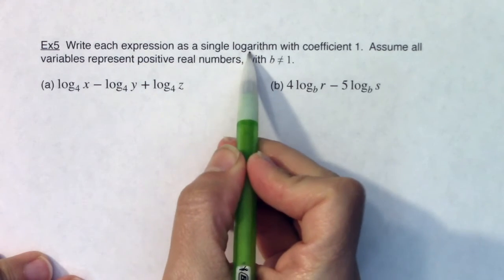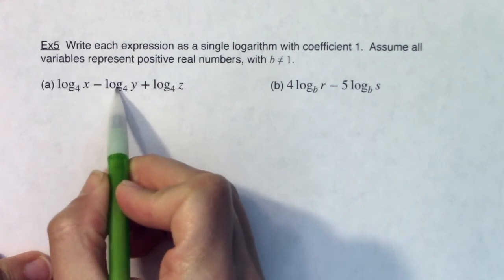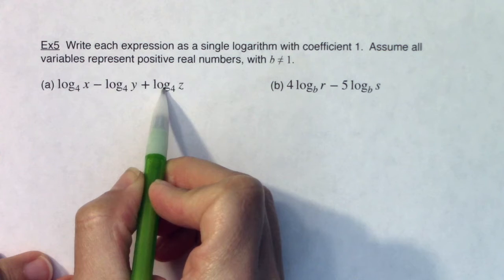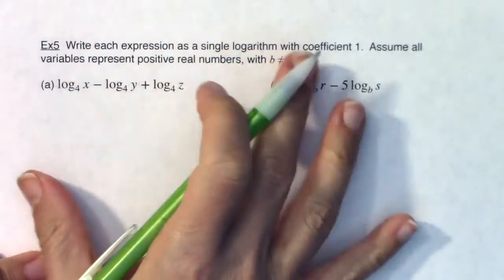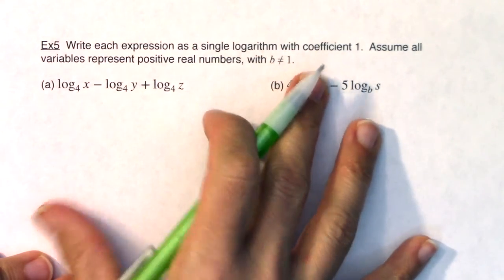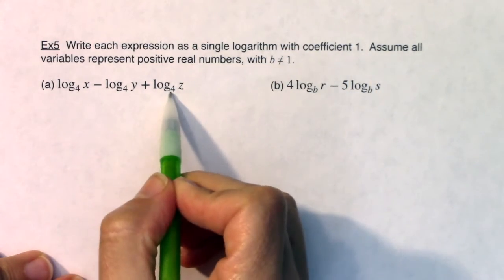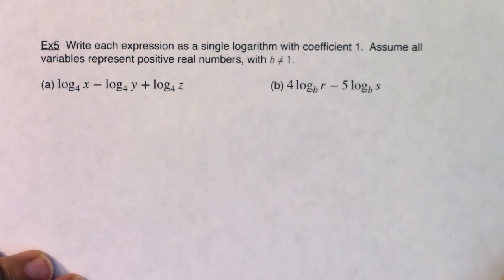So when I say I want a single logarithm, you can see right here I have three separate logarithms and I want to combine them. The first thing to take note is that the bases are the same. If I want to use any of the properties of logarithms in this section, the bases have to be the same. If they weren't the same, then I couldn't simplify them into a single expression or into a single logarithm, and you need to recognize that.